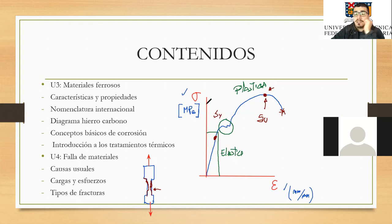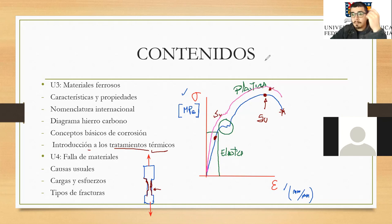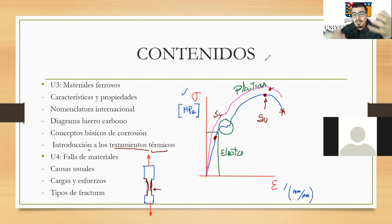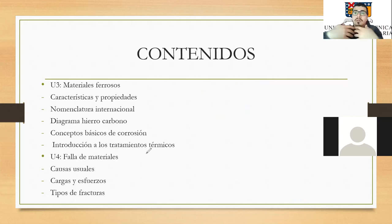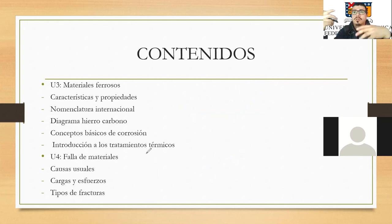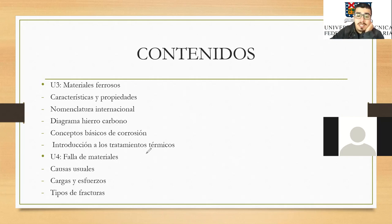Si aplico un tratamiento térmico a un material, esta curva del diagrama ya no va a ser la misma, sino que tiende a mejorar sus características. Ojo, también se puede hacer peor, entonces tengo que saber para qué voy a hacer el tratamiento térmico. Algunos tratamientos térmicos son solamente para endurecer las capas superficiales, otros endurecen todo el material y otros le dan más ductilidad.